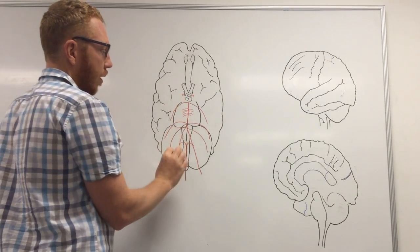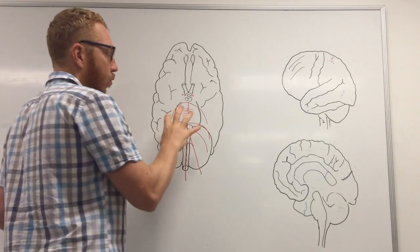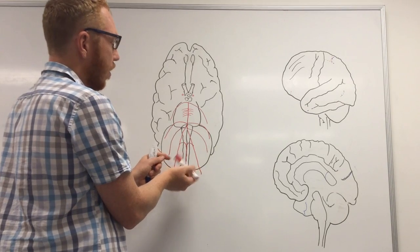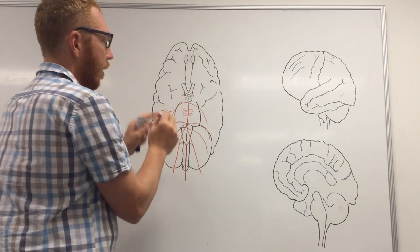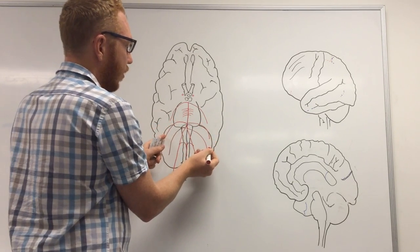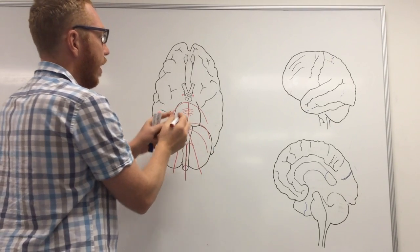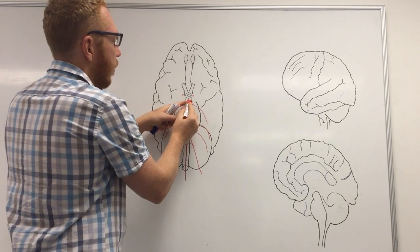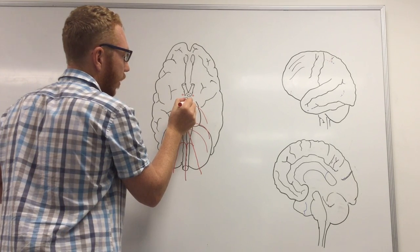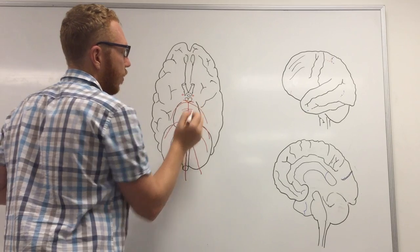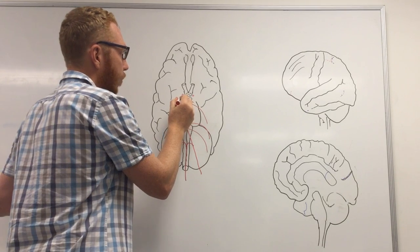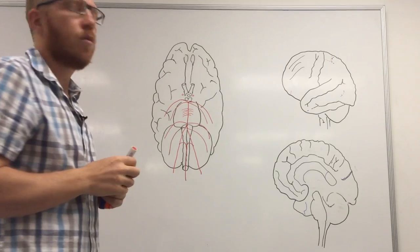To summarise the posterior supply: the two vertebrals give three branches each, then form the basilar, which runs on the front of the pons and gives three paired arteries — the anterior inferior cerebellar artery, the pontine arteries, and the superior cerebellar artery. The basilar then terminates as one of the first major blood vessels to the cerebrum: the posterior cerebral artery, or PCA.